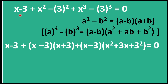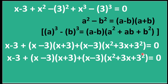Applying these formulas: the first term stays (x − 3), the second term becomes (x − 3)(x + 3), and the third term expands as (x − 3)(x² + 3x + 3²), which is all equal to 0.